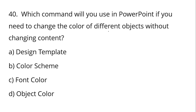Question number 40: In PowerPoint, if you need to change the color of different objects without changing the content, you should use the Color Scheme — Option B is the correct answer. This mock test covered 40 questions. Share your score in the comments. For PDF exam materials, visit our Telegram channel. Please like and share. Thank you.